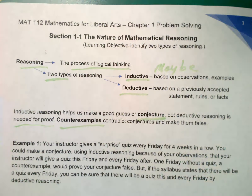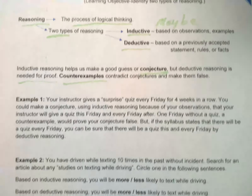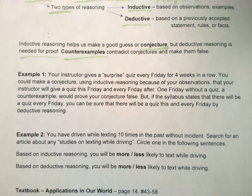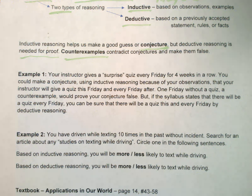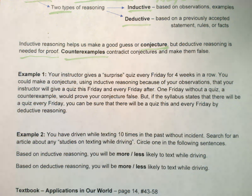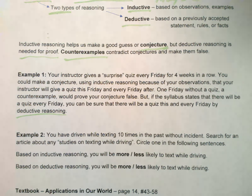For example: your instructor gives a surprise quiz every Friday for four weeks in a row. You could make a conjecture — a good guess using inductive reasoning because of your observations — that your instructor will give a quiz this Friday and every Friday after that. One Friday without a quiz would be a counter-example, proving your conjecture false. But if the syllabus states there will be a quiz every Friday, that is a previously accepted statement, rules, or fact, and you can be sure about that by deductive reasoning.